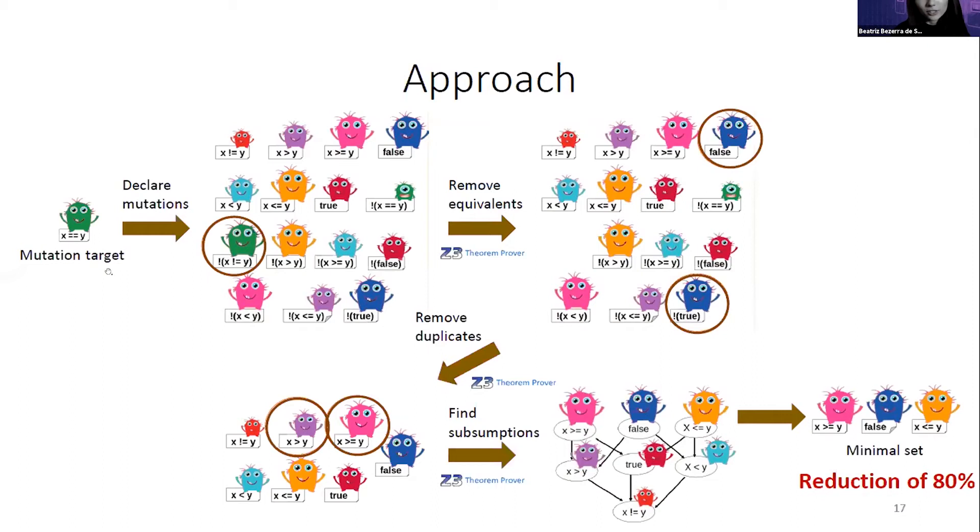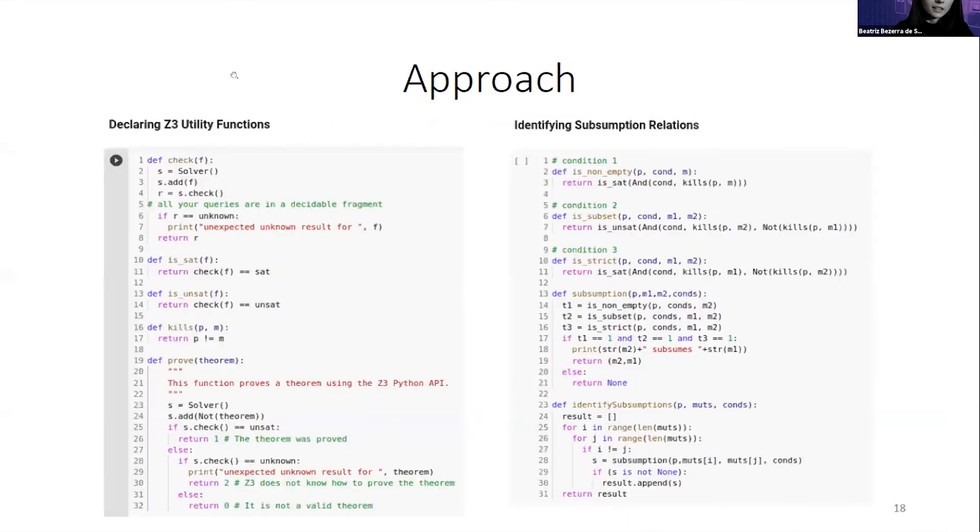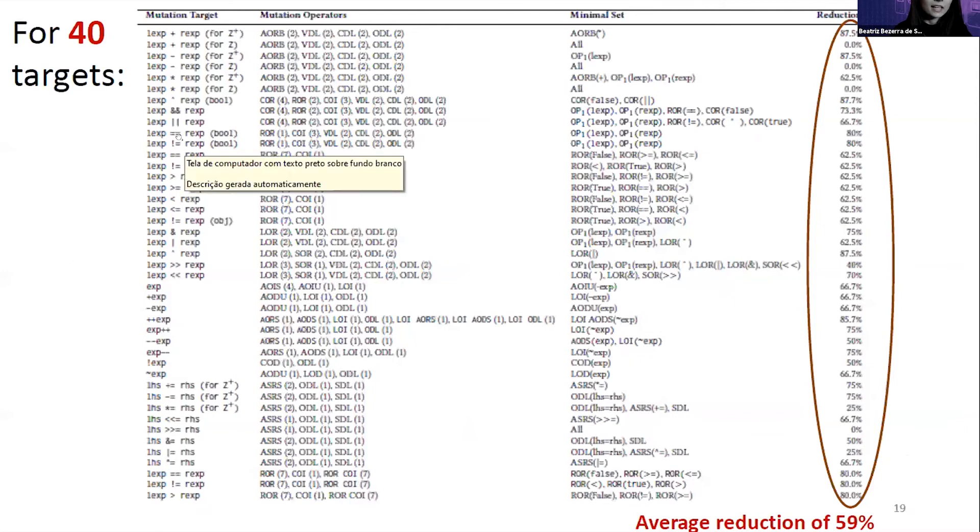Notice that for the equals target, we had 15 mutations, but our technique said that only 3 are useful. So it's a reduction of 80%. Here is part of the encoding of our technique in the Z3 Python API to prove theorems and identify subsumption relations. We applied our technique for 40 mutation targets. Our technique produces the results only in a few seconds, and the reduction of mutations is around 59%. Our technique is sound. We prove properties among mutations.